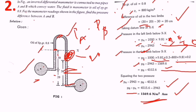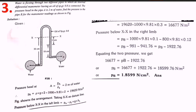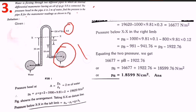Third question: water flows through two different pipes connected to an inverted differential manometer containing oil of specific gravity 0.8. The pressure head in pipe A is 2 meters of water. We need to find the pressure in pipe B for the manometer readings shown in the figure.